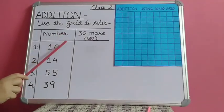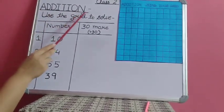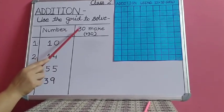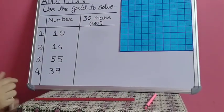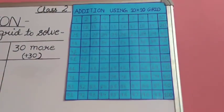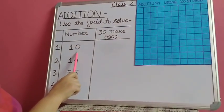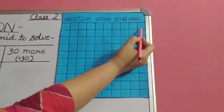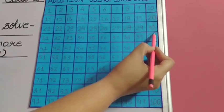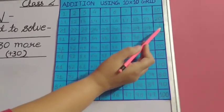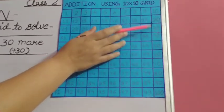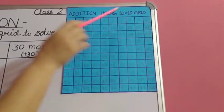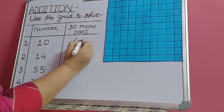Now moving on to the exercise. We have to use the grid to solve this. We have a few numbers and we have to add 30 to them. The first number is 10. We will find 10 on the grid. From number 10, we will move 3 rows down — 1, 2 and 3. Moving 1 row means we are adding 10, so 10 plus 10 plus 10. We reached 40. The answer is 40.